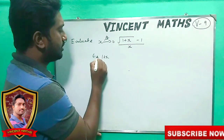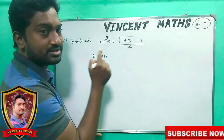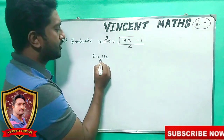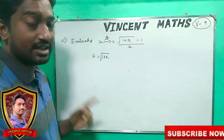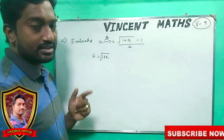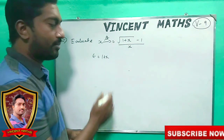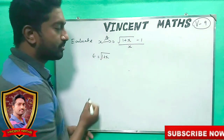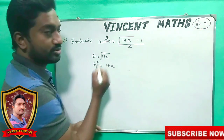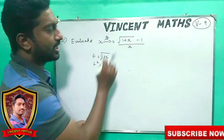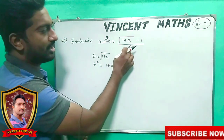Let t equal 1 plus x, and there is a square root. How do you want to do it? Square root of 1 plus x. This square root will cancel. Then t equals 1 plus x.